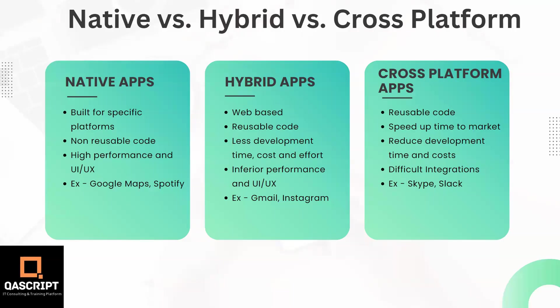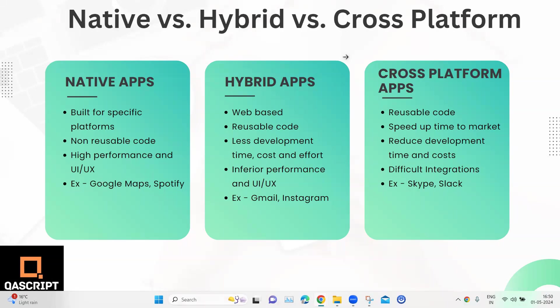All of these apps have their own benefits and disadvantages. Talking about native apps, native app development is basically building mobile apps for a specific platform using specific programming languages and tools. It has its own advantages — the performance is quite high and you get better UI and UX designs. But the downside of native apps is that you cannot reuse the code; native apps are built with non-reusable code. These are mainly meant for rich media gaming apps or complex enterprise applications. Some examples of native apps are Google Maps and Spotify.